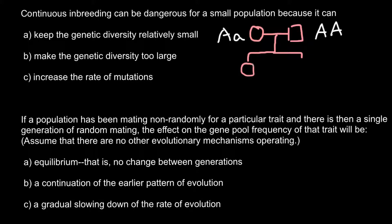Now imagine that this pair produces two offspring — one female and one male. So these are siblings. Then we have a mating between them — I put a double bond here because this is going to be a consanguineous mating — and we have a progeny of unspecified gender, because gender here is not important.